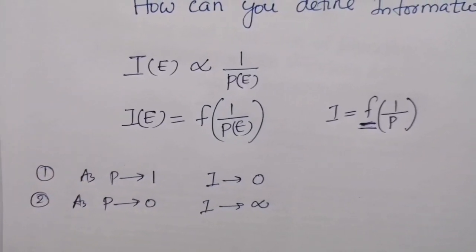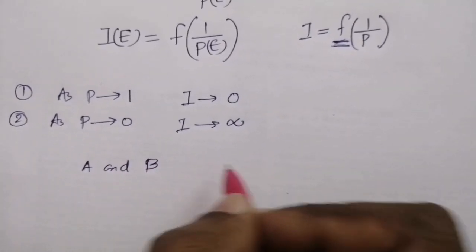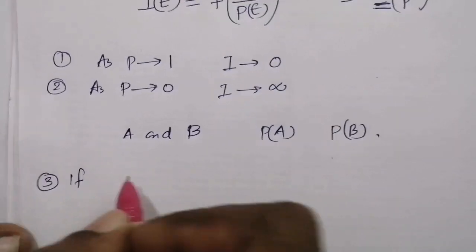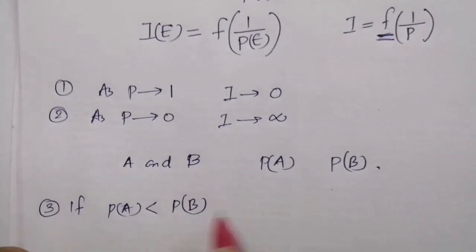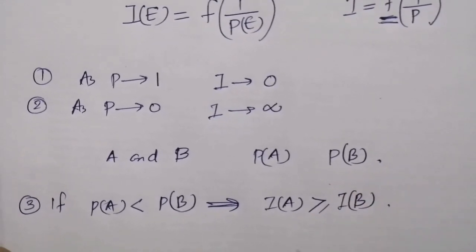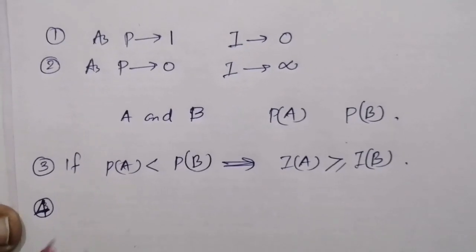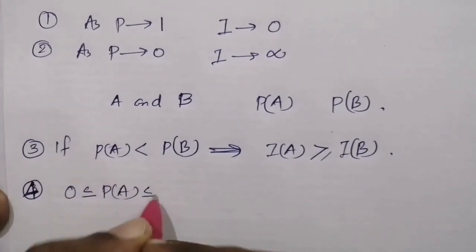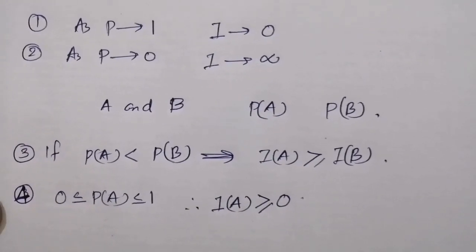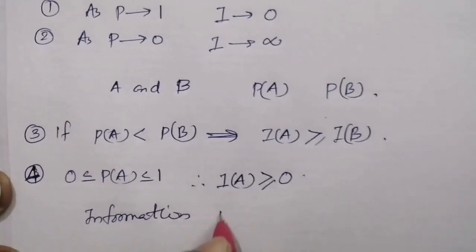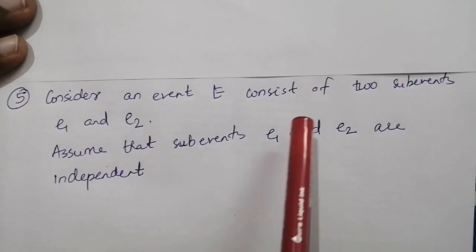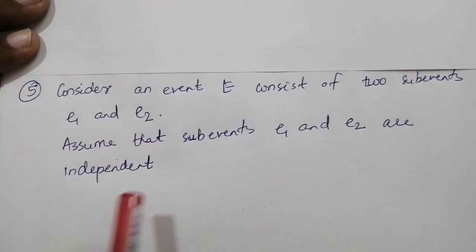Consider messages designated by A and B with probabilities p(A) and p(B). Condition three: if p(A) is less than p(B), then I(A) should be greater than or equal to I(B). Condition four: since zero ≤ p(A) ≤ 1, therefore I(A) should be greater than or equal to zero — that is, information is non-negative.